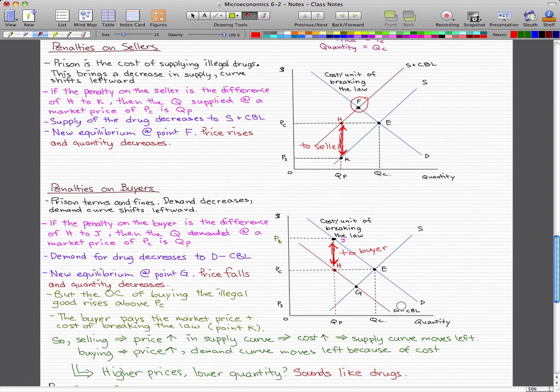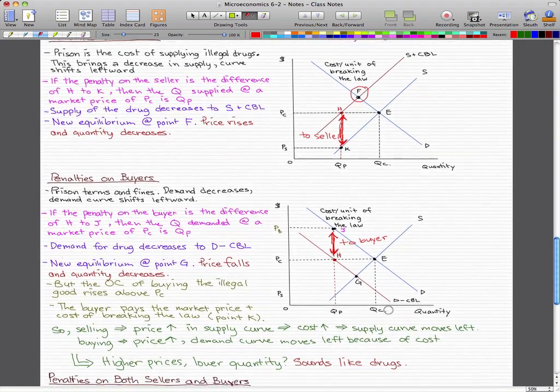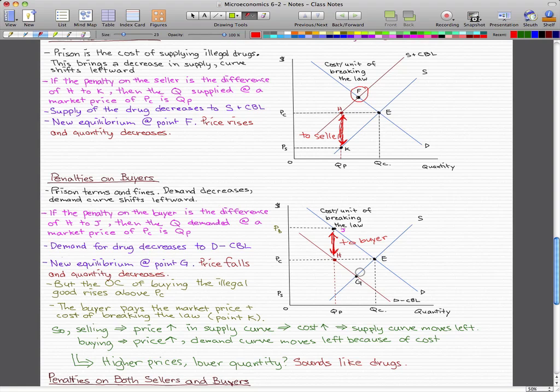The quantity demanded at the market price of PC is, again, QP. The demand for the drug decreases from D to D minus CBL, CBL being the cost of breaking law. The new equilibrium point now is different than the penalties on sellers. It is at point G. The price actually falls and the quantity decreases.